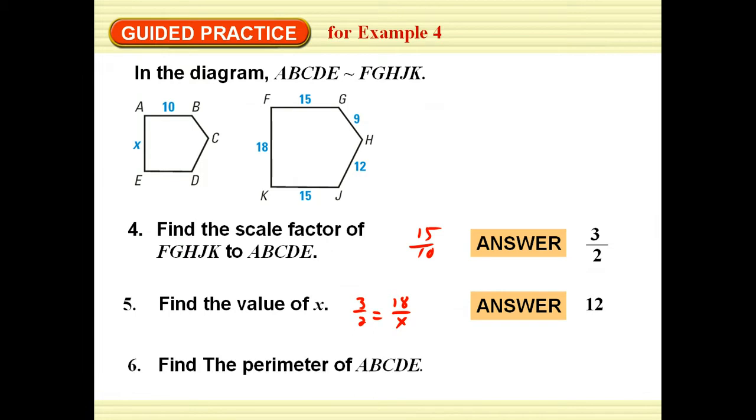What about the perimeter of ABCD? First thing I need to do is find the perimeter of FGHJK. So I can then use my scale factor of 3 over 2. The perimeter over here comes out to be 69. We are looking for the perimeter of the small one. When we work that out, we will see that it is 46.